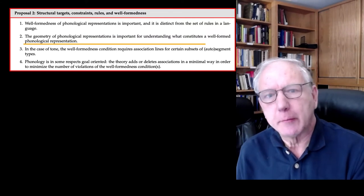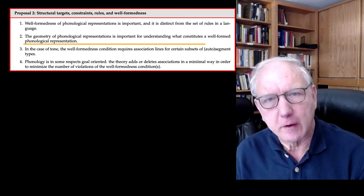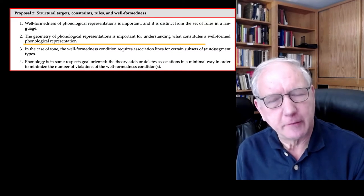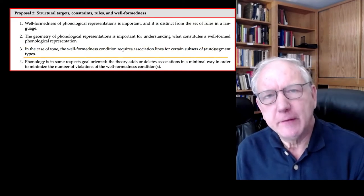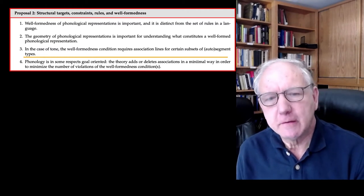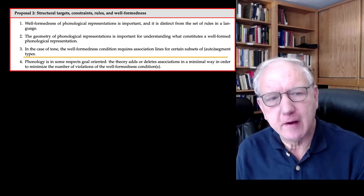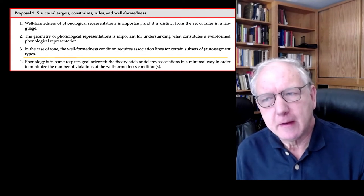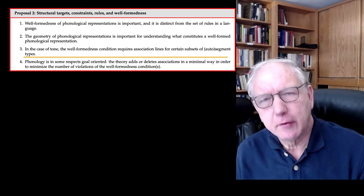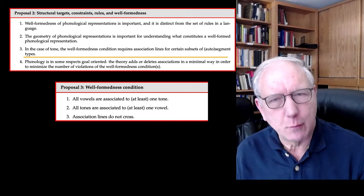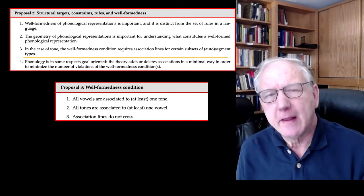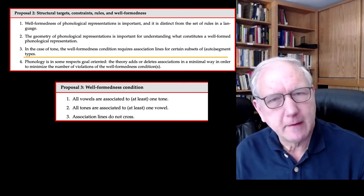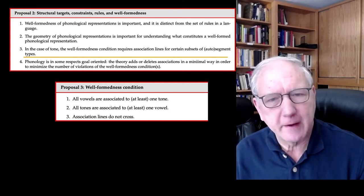The second point was that the geometry of phonological representations is important for understanding what constitutes a well-formed phonological representation — something new at this time. In the case of tone, which is what I looked at most carefully, the well-formedness condition essentially required association lines for certain subsets of autosegments. An autosegment is a segment on one tier or another. I observed that all tones were associated with at least one vowel, and all vowels were associated with at least one tone, and I expressed that as a well-formedness condition which could be satisfied completely or not, with degrees of respect for that condition.